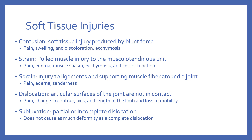Next, we have sprains. Sprains are injuries to ligaments and supporting muscle fibers around a joint — you may have had a sprained ankle as a kid. Symptoms include pain that may increase with motion, edema, and tenderness. The severity of the sprain is graded according to ligament damage and joint stability. Dislocations occur when the articular surfaces of a joint are not in contact, meaning the joint is out of its socket. A dislocation is an emergency, causing significant pain, changes to the contour, axis, and length of the limb, and loss of mobility.